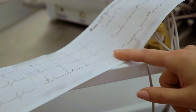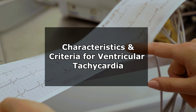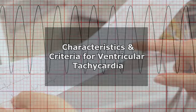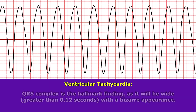What are some characteristics and criteria that tell you that you're dealing with ventricular tachycardia? The hallmark finding in this rhythm will be its QRS complex, and the QRS complex is really the star of this rhythm. It's really easy to identify because the QRS complex is going to be really wide — greater than 0.12 seconds — and it's going to look bizarre.